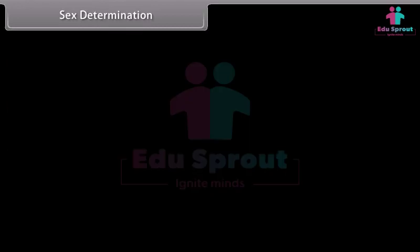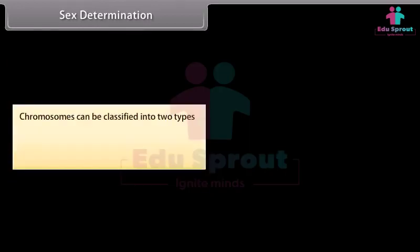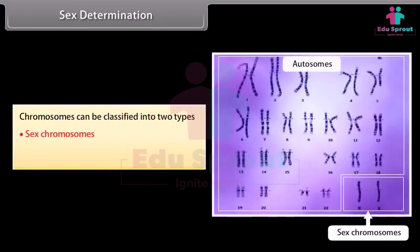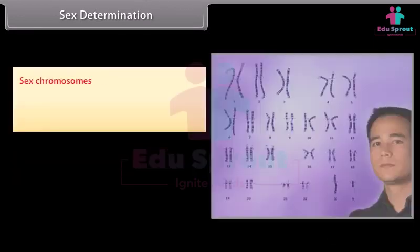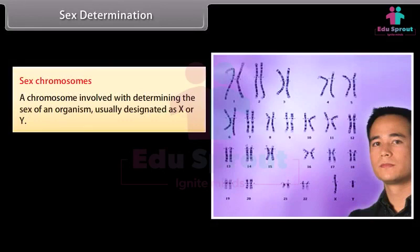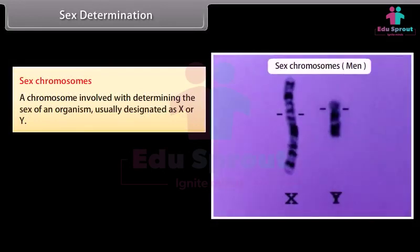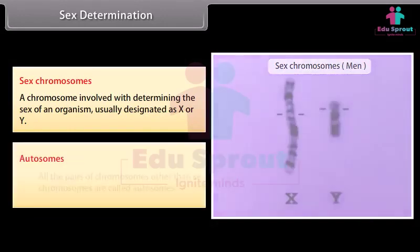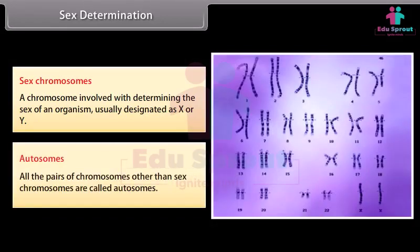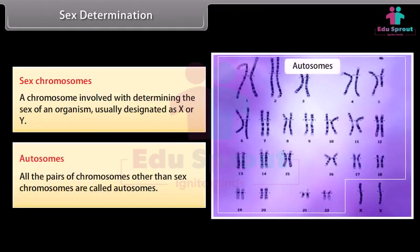Sex Determination. Chromosomes can be classified into two types: sex chromosomes and autosomes. Sex chromosomes are chromosomes involved in determining the sex of an organism, usually designated as X or Y. Autosomes are all the pairs of chromosomes other than the sex chromosomes.